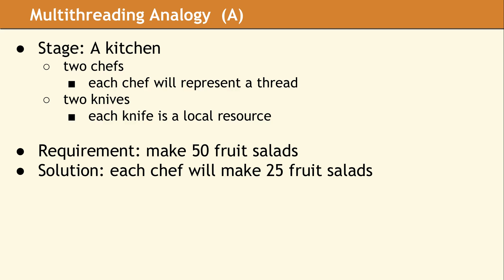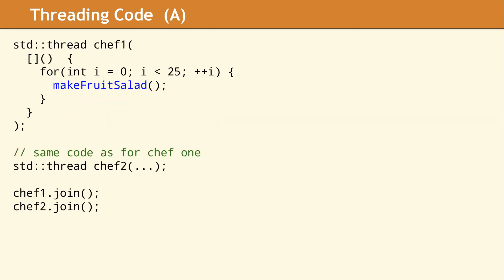In this example, we have a kitchen with two chefs and two knives — these are the resources. We have a requirement to make 50 fruit salads. One solution would be that each chef makes 25 fruit salads. Here's what the code would look like. We set up a thread called chef1 and pass a lambda to its constructor — the body of this lambda is the code executed on that separate thread, so this chef simply makes 25 fruit salads and terminates. Chef2 does exactly the same. When we are finished starting both chef threads, we join both of them. This means that the code will block until both threads have finished executing.